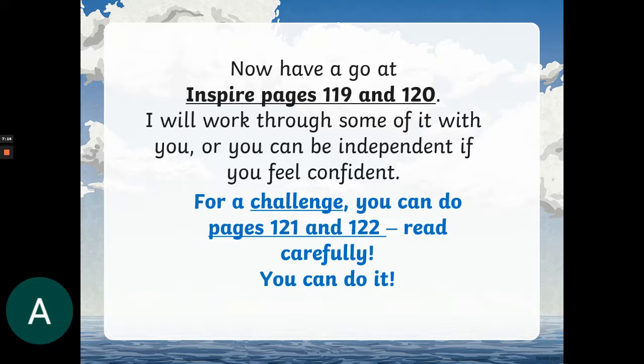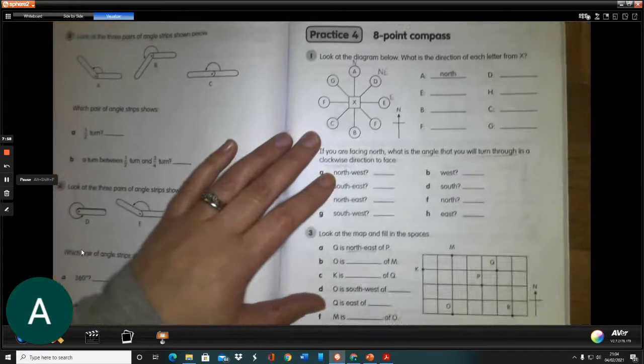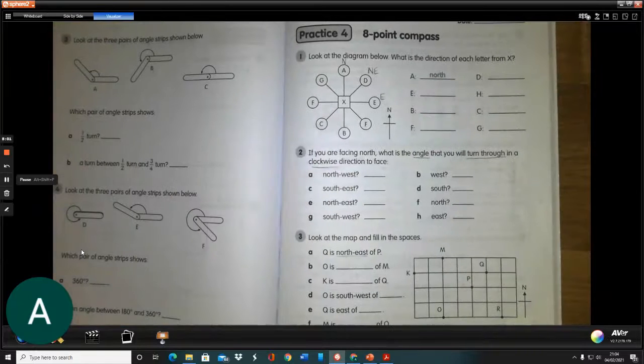Right, so now, in your Inspire books, you're going to turn to page 119 and 120. I will work with you through some of it. Or, if you would like to, you can go and do it completely by yourself. Pause the video now. Have a go. So, where it says there for a challenge, you can do pages 121, 122. That's not the page numbers. You will see that it's actually page 123 and 124. So, just go steady with that. I'm sorry. I made a mistake on my page numbers.